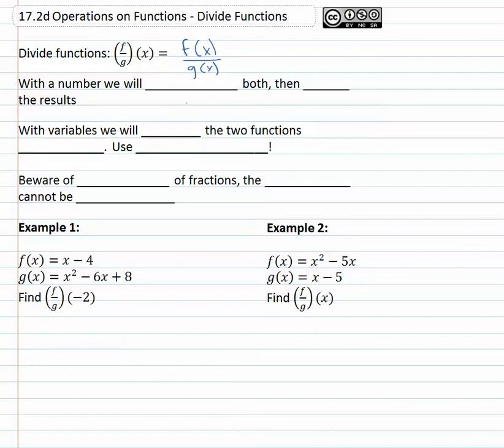Now with numbers, this simply means we have to evaluate both functions. We'll get two results and then we will divide the results. With variables, this is even easier because we just have to divide the two functions together.